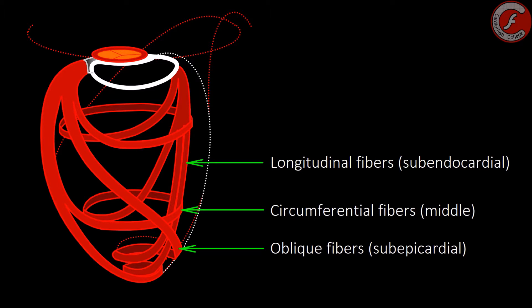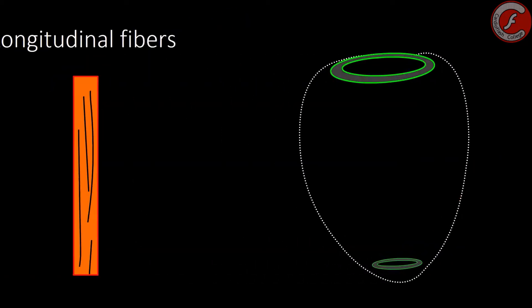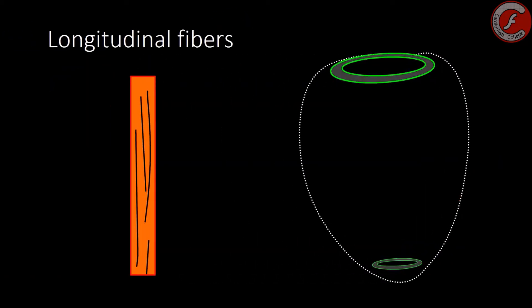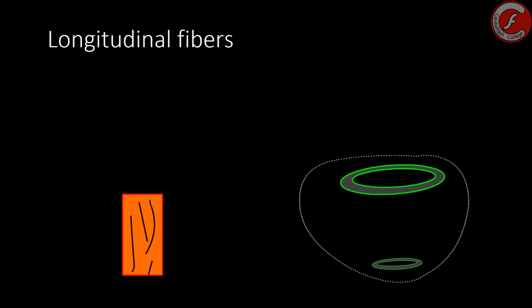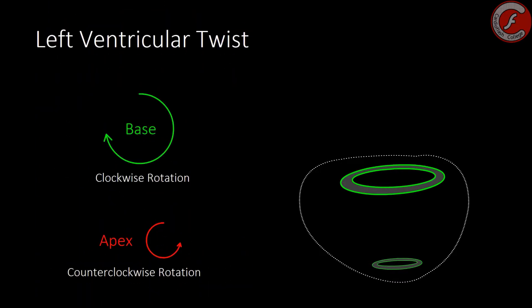During systole, subendocardial and subepicardial fibers contract in different moments and in opposite sense. The subendocardial fibers are the first to activate, which generates a longitudinal shortening of them, a circumferential thickening, and an approach of the base of the left ventricle to the apex of the heart. This process of shortening of the longitudinal fibers and simultaneous covilinear elongation of the subepicardial fibers generates a clockwise rotation movement of the base and counterclockwise of the apex, configuring a process known as twist, or ventricular torsion.